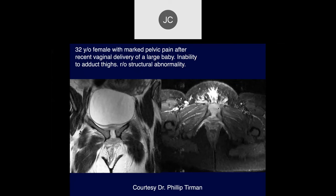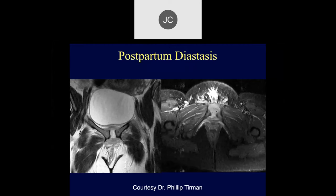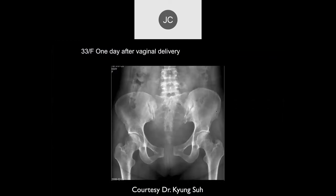32-year-old female with marked pelvic pain after recent vaginal delivery of a large baby, inability to adduct thighs, rule out structural abnormality. We see widening of the pubic symphysis and maybe capsular injury. This is called postpartum diastasis — basically a tear of the capsule with instability of the pelvic ring.